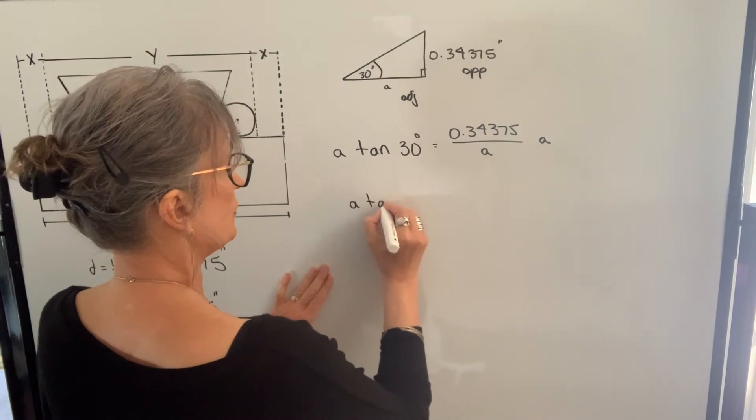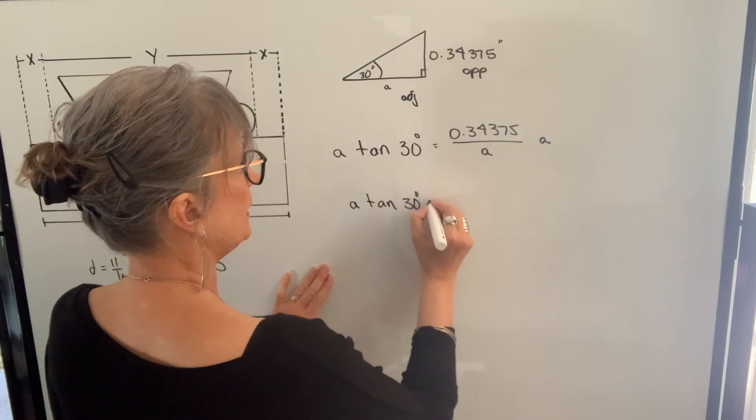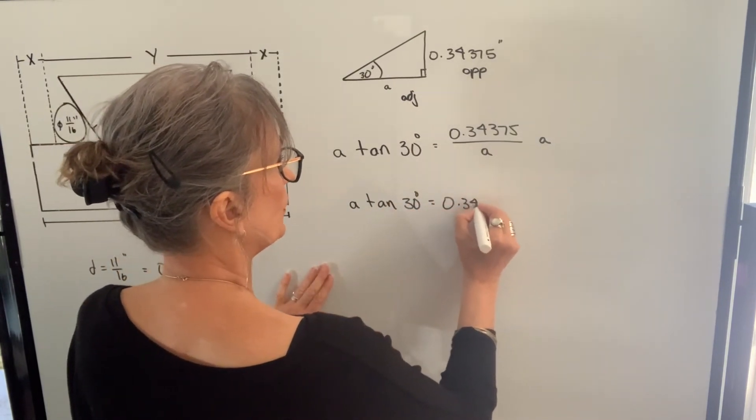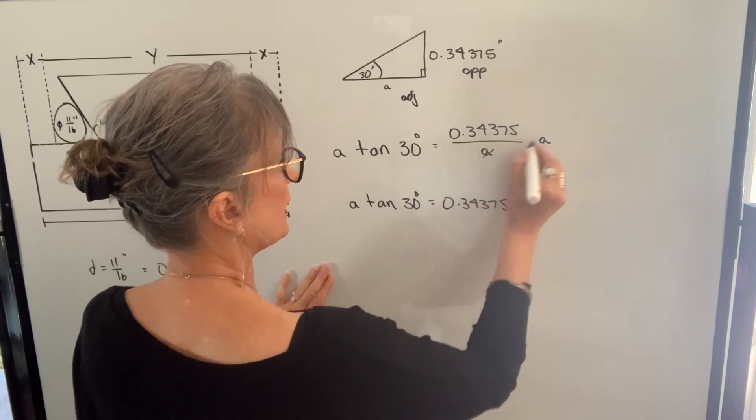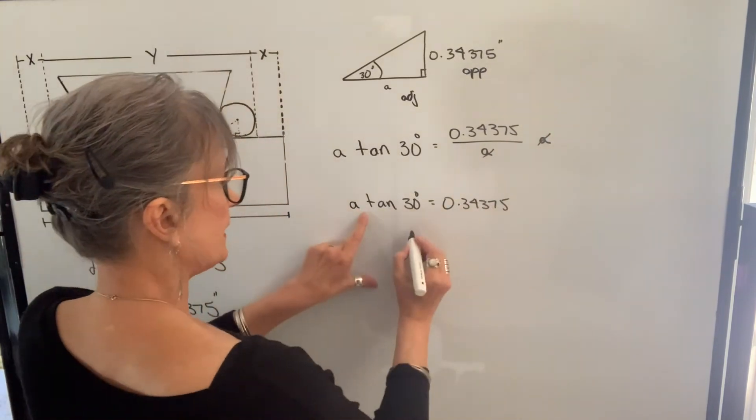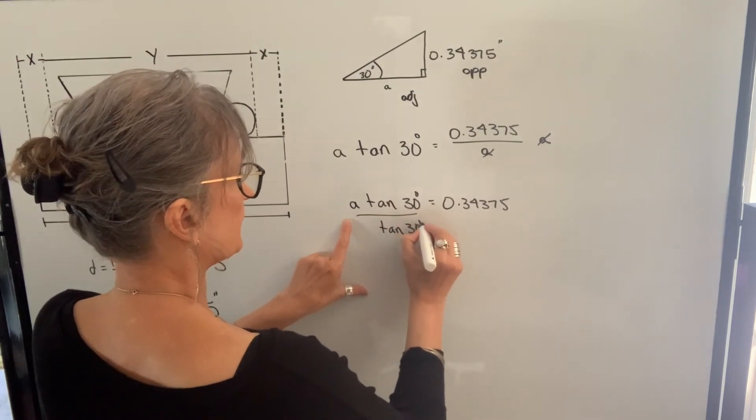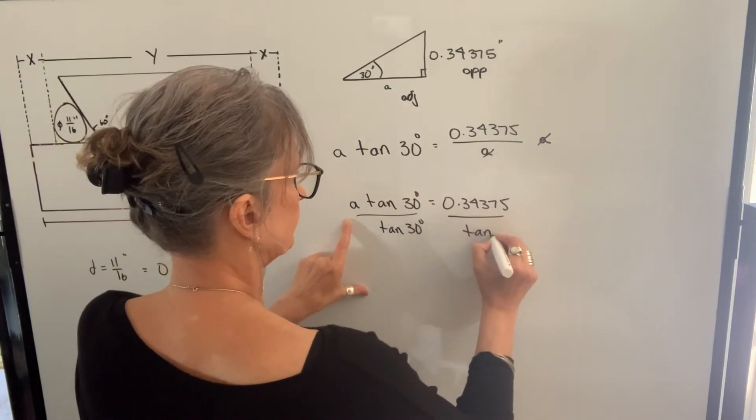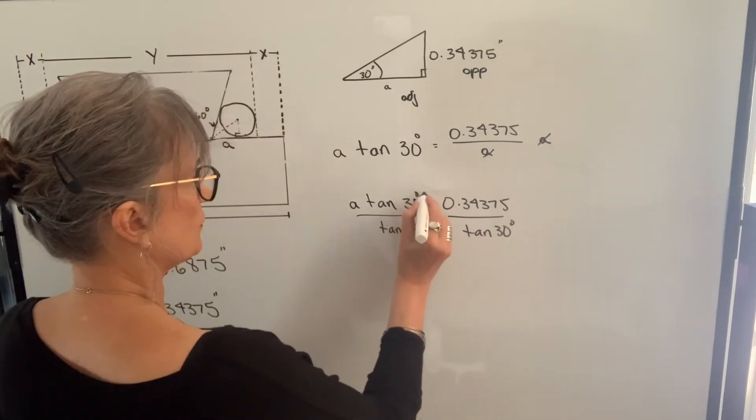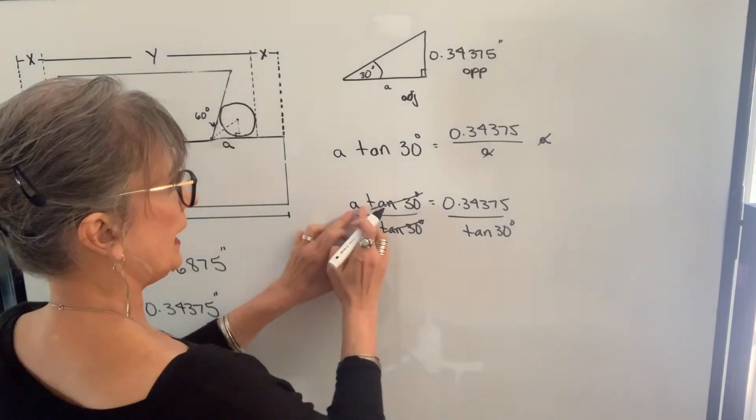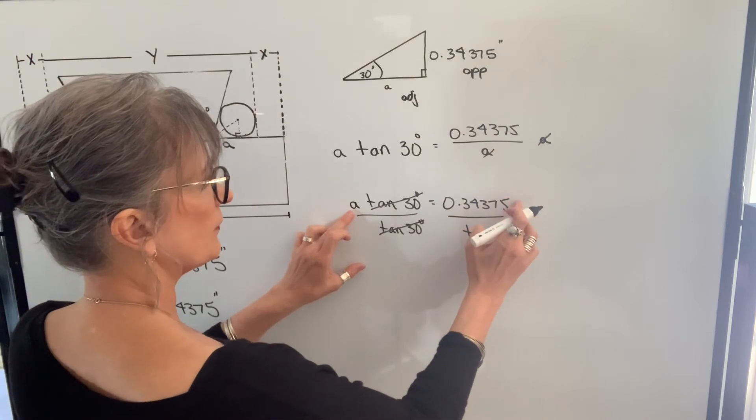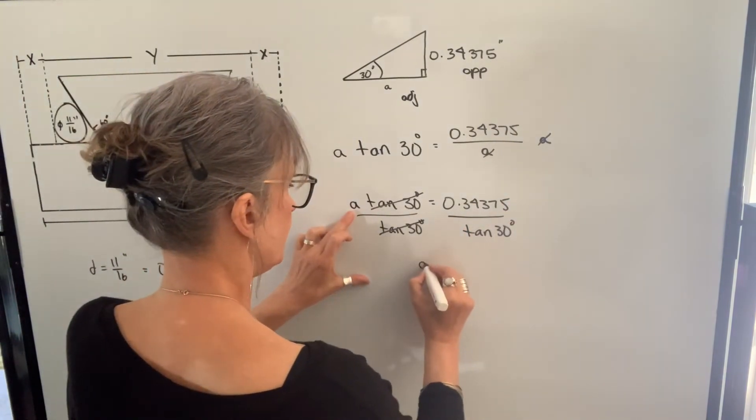So I'm going to have A times the tangent of 30 degrees equals 0.34375. The A cancels. Now to find A, I'm going to divide both sides by the tangent of 30 degrees. So tangent of 30 degrees cancels here. A will equal 0.34375 divided by tangent of 30 degrees.